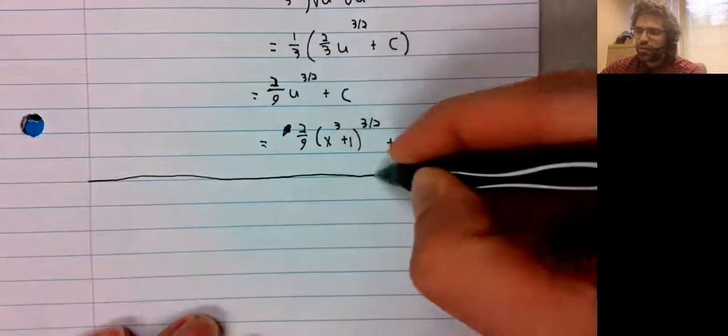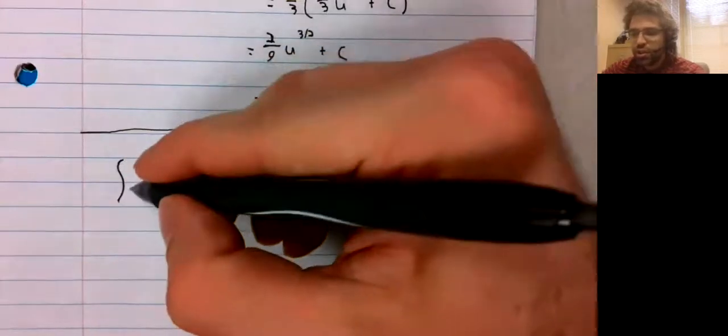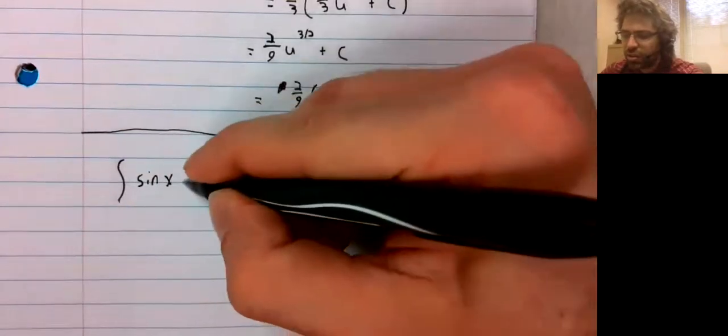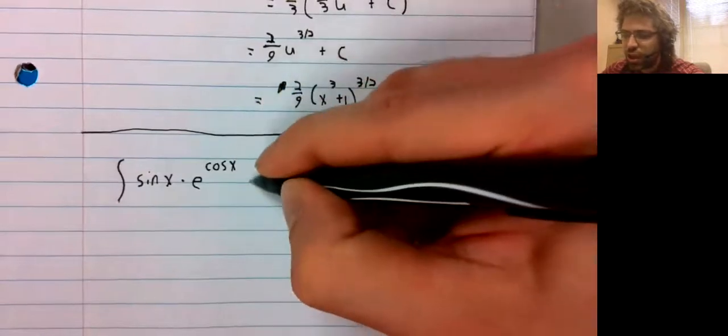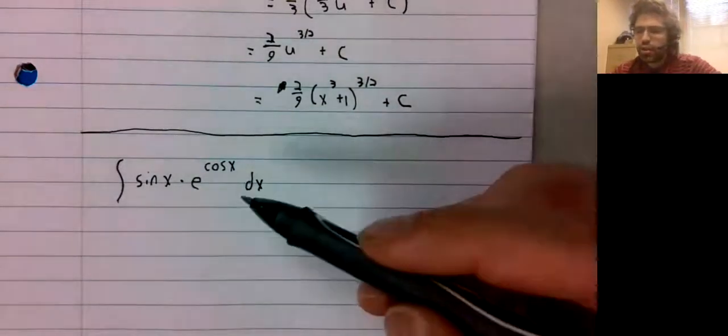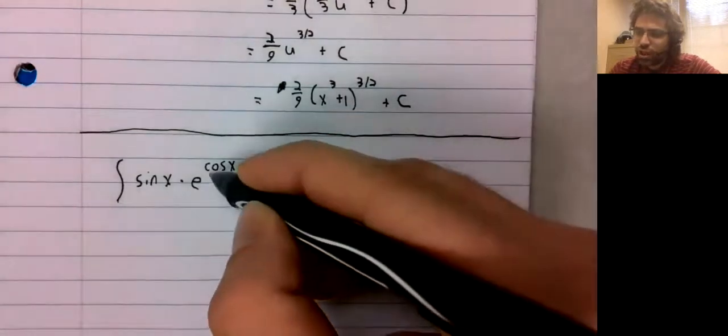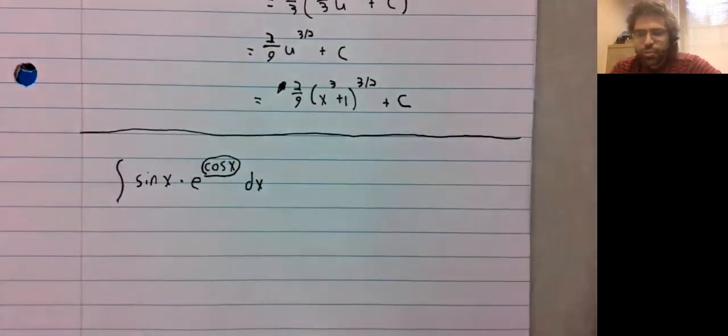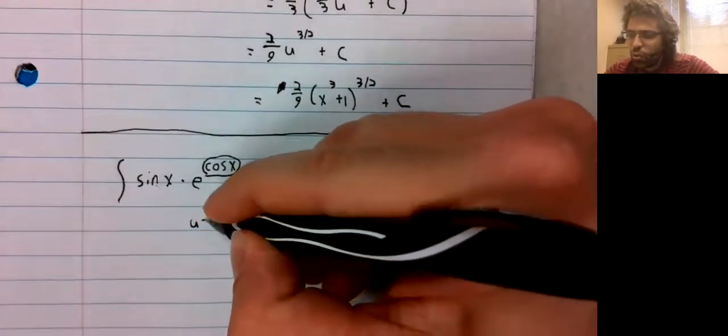We still have some room on the page. So let's integrate the sine of x times e to the cosine of x. We have composition here. E raised to the cosine. The cosine is the inside function. And we have the derivative of the inside function more or less.